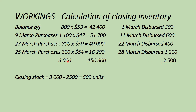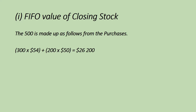Let's get into valuing the closing stock using FIFO. We have to look at how much of the 500 units comes from which purchases. Using first-in first-out, the stock remaining at the end would be from the last set of goods that came in. If that's not enough, we go to the second-to-last, and so on moving up. So the 500 units in closing stock is made up of the last 300 bought at one price and 200 from the purchase before that — the 300 and 200 together give us 500.